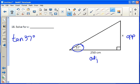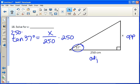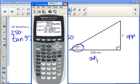So to solve for x, we just multiply both sides by 250. You can plug that straight in your calculator. Again, make sure you're in degree mode. We get 250 times the tangent of 37 degrees. We get 188.388 or 188.389 I think was how it rounds.